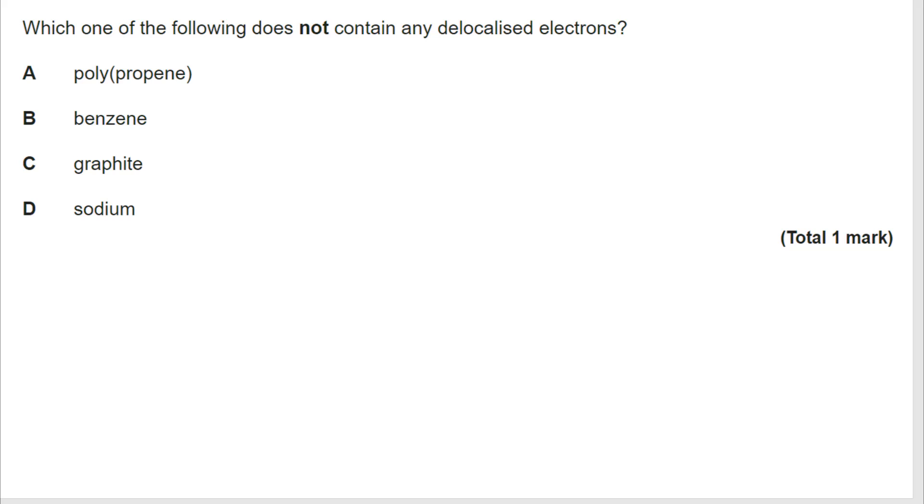Okay, so which of these do not contain delocalized electrons? Well, benzene certainly does. It has a delocalized ring. That's covered in the aromatics topic in year 13 in great detail. We know that in graphite, there are delocalized electrons. Each carbon has one delocalized electron. That's what allows graphite to conduct electricity, despite being a non-metal. And we know that metals have delocalized electrons. And sodium would be one delocalized electron per sodium atom. Because it's in group one, it loses one electron to get the full outer shell, forming the Na+ ions. So that leaves us with polypropene. Now, polypropene is entirely made up from covalent bonds. There are no delocalized electrons within there. So the correct answer is A.